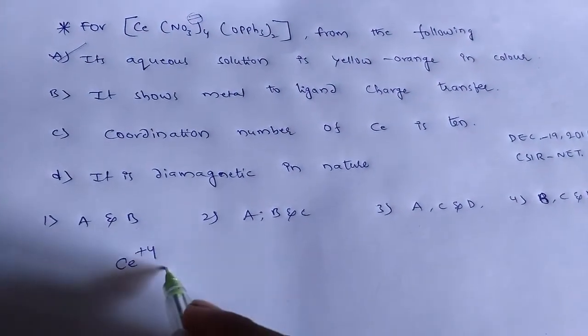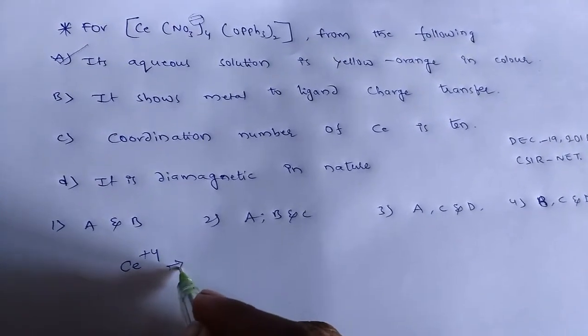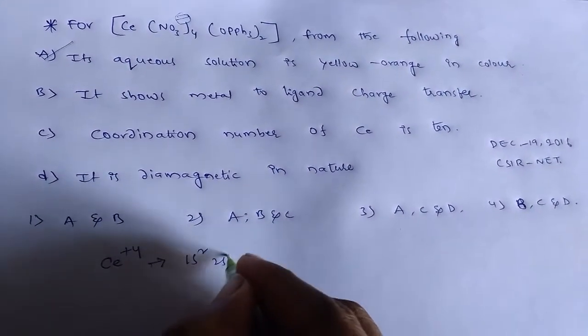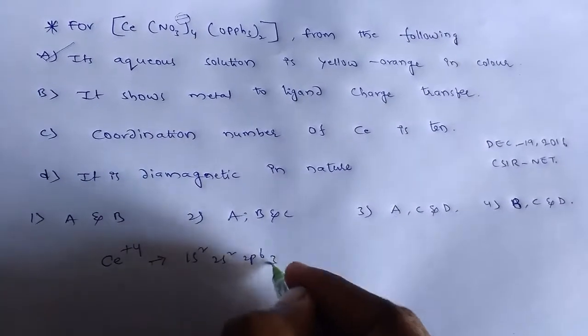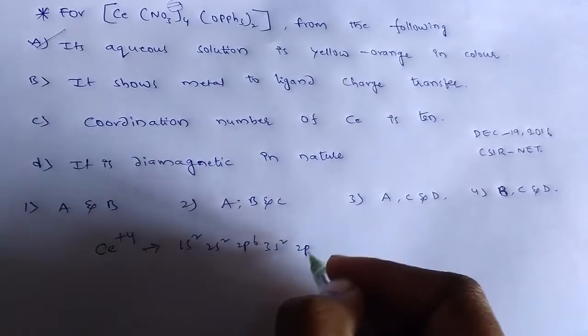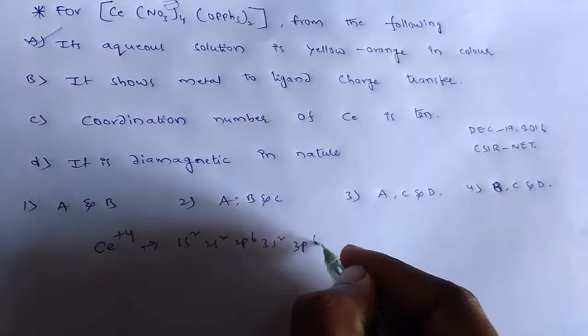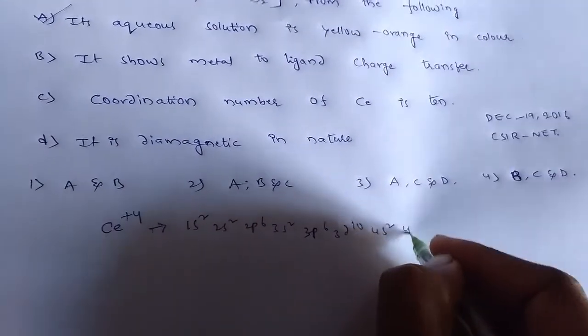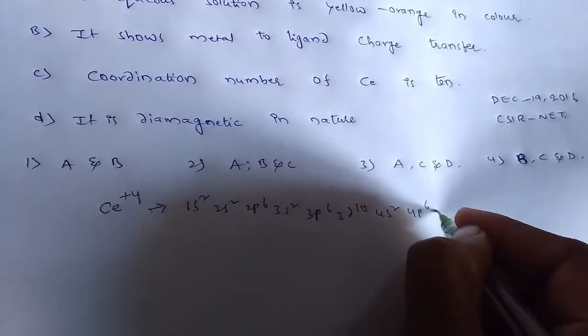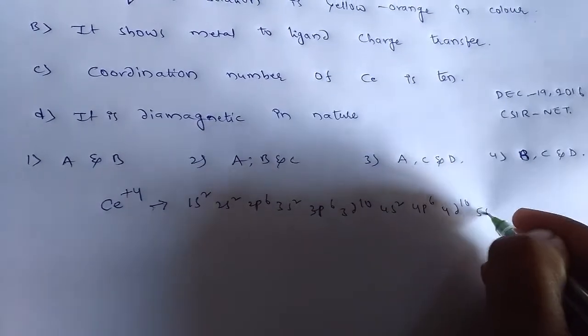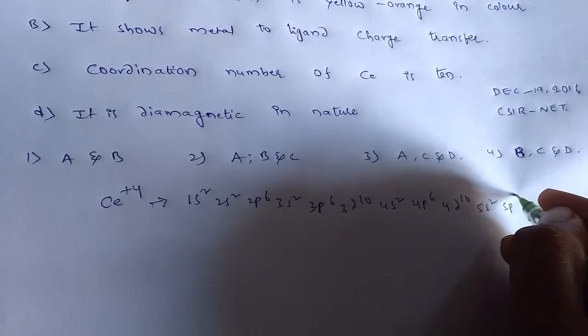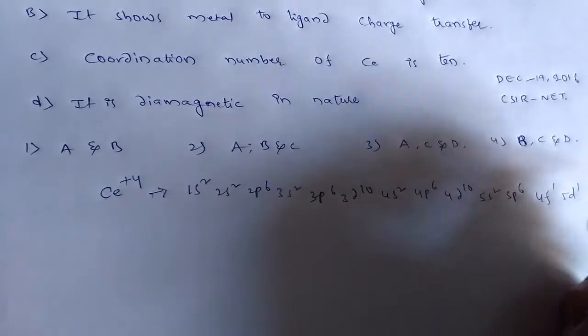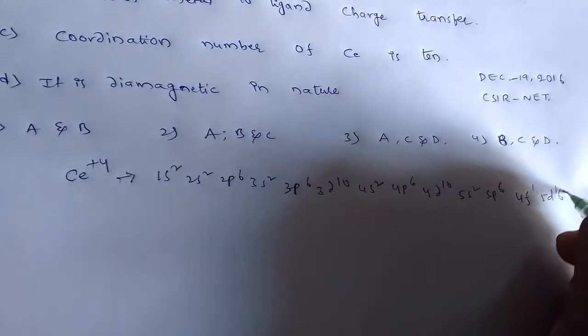If you consider its electronic configuration, I am giving complete electronic configuration: 1s2, 2s2, 2p6, 3s2, 3p6, 3d10, 4s2, 4p6, 4d10, 5s2, 5p6 and 4f1, 5d1, 5d1 and 6s2.